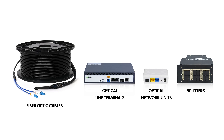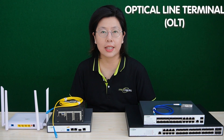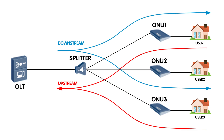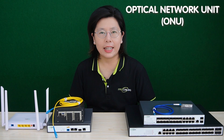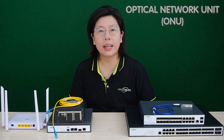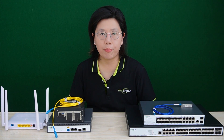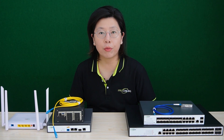The key components of a passive optical network include the optical line terminal OLT, optical network unit ONU, fiber-optic cables, and optical splitters, collectively forming an efficient and robust system. At the heart of PON architecture is the OLT, responsible for managing and controlling the data traffic within the network. The ONU, situated at the customer premises, connects to the OLT using fiber-optic cables, serving as the interface for end-users.